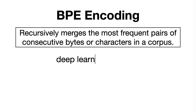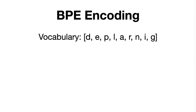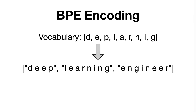The first step that BPE encoding does is to pre-tokenize the sentence by splitting the text into words, resulting in 3 words with frequency 1 in our case: deep, learning, and engineer. Now we initialize the vocabulary with all the individual characters found in the sentence, and if we were to tokenize it, we would get the following characters divided by space.